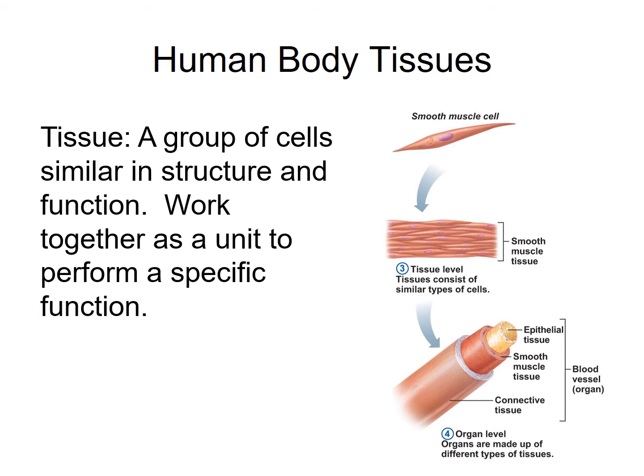Smooth muscle controls the size of a blood vessel by dilating or constricting. This controls the flow of blood through the blood vessel and it also has an impact on blood pressure. And lastly, connective tissue found on the outer surface protects the deeper tissues and also binds and connects that blood vessel with surrounding tissues and organs.